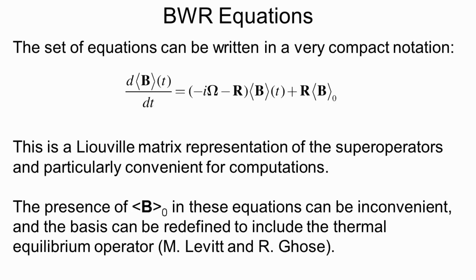In some applications, the presence of the equilibrium value of the density operator — B sub 0 — can be inconvenient. It's possible to expand the operator basis to include what's called the thermal equilibrium density operator, and then that term is incorporated into the relaxation matrix. That work has been done by Malcolm Levitt and Ronnie Ghosh in the literature. This will be our core equation for analyzing relaxation in NMR spectroscopy.